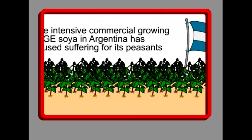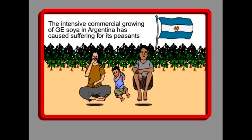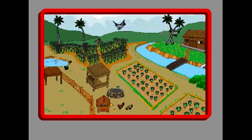In Argentina, thousands of peasants and children are suffering from poverty and malnutrition because of the intensive commercial growing of GE soya. They have lost their local food like vegetables, which they depended on for a healthy diet. Now they are forced to eat GE soya, which is harmful and not their cultural food. We do not need GE crops, GE rice, or GE food.